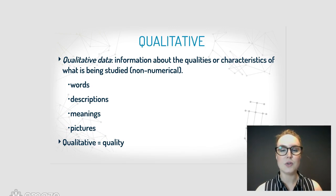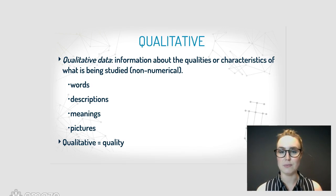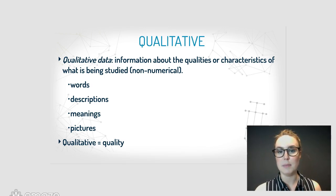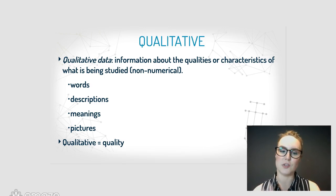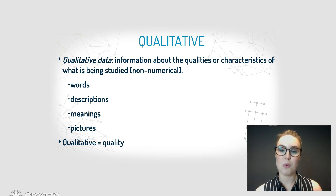Now let's look at qualitative data. This is information about the qualities or characteristics of what is being studied. Where quantitative data was about numbers, qualitative data is about words, pictures, descriptions, and meanings. Where quantity was for quantitative, with qualitative we're looking at quality.